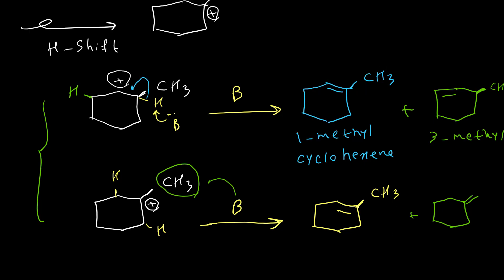In general, when we have an E1 mechanism, most of the time our major product comes from the more stable carbocation. In this case, it is tertiary. So tertiary carbocation is more stable than secondary carbocation.